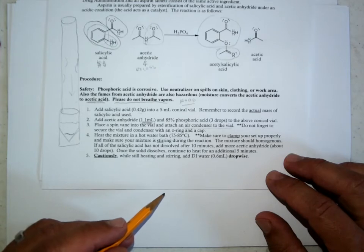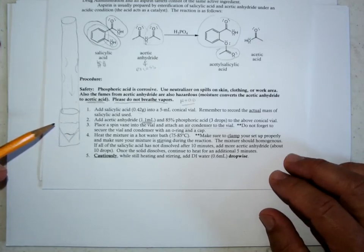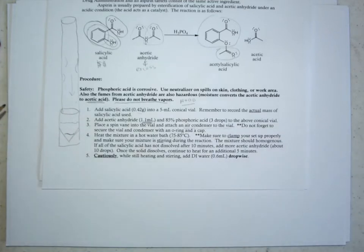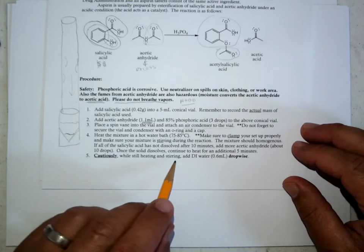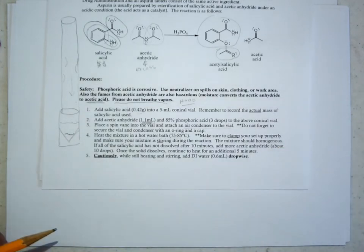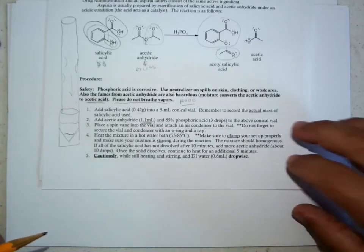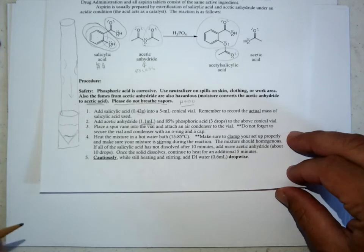Once everything's dissolved, you want to continue to heat, so any soluble salicylic acid will also get a chance to react. And then cautiously, while you're still heating and stirring, you'll add a little more water. And this water that you put in there will make sure that any excess acetic acid reacts and won't be in there when you try to work this up.